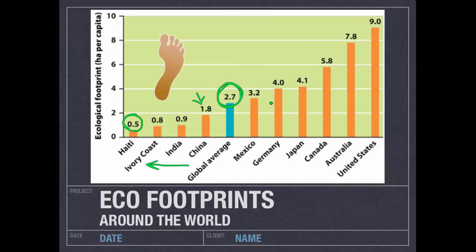Going the other way, you have Mexico, Germany, Japan, Canada, Australia, and then all the way up is the US. The average American citizen needs about 9 hectares of resources to meet the needs of their lifestyle. Per person, the average American consumes somewhere between 4 and 5 times the amount of resources of the average global citizen. This is why America, while it only has 6% of the world population, consumes about 30% of the world's resources — because our lifestyle is so different from people in the rest of the world.